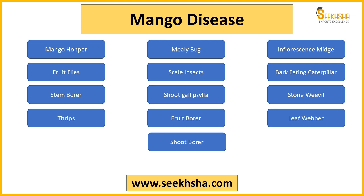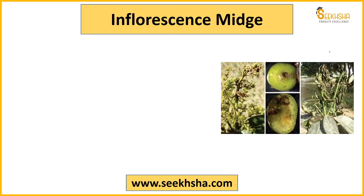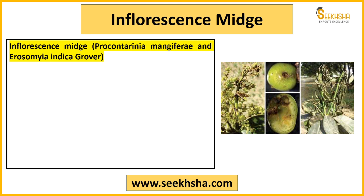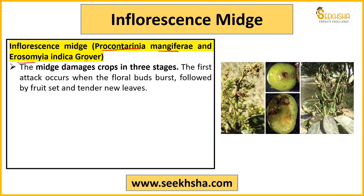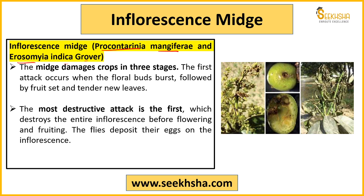Mealy bug ke baad jo next yahan par pest aata hai that is inflorescence midge. Inflorescence midge ke andar botanical name mein jo do species aati hain: ek hai Procantarinia mangiferae, aur doosri hai Erosomyia indica. Yeh midge teeen stages ke andar aapke crop ko mainly effect karta hai: pehla tab hota hai jab aapka floral bud burst hota hai, doosra jab fruit set hona shuru ho jaata hai, aur teesri stage hoti hai jab nai pattiyaan aani shuru hoti hain. Sabse zyada jo dangerous hota hai woh pehli stage ke upar attack ho jaaye toh hota hai — kyunki isse poora flowering aur fruiting ka system kharab ho jaayega. Flies apne eggs ko inflorescence ke upar hi deposit kar deti hain aur ultimately jo aapke floral parts hain woh dry hokar girne shuru ho jaate hain.